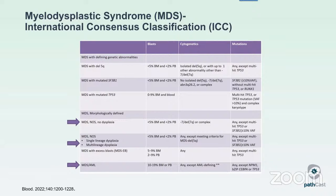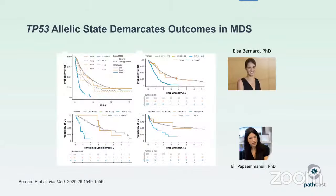Why is the allelic status of TP53 in MDS so important? This really comes from a seminal study published by Elsa Bernard and Eli Papamanuel, both at MSK at the time. This study came out of the IPSSM classification. They noticed that patients with one TP53 mutation, in terms of peripheral blood parameters and leukemia-free and overall survival, behaved like patients with wild type TP53. The detrimental effect and very poor prognosis associated with TP53 mutations was really limited to patients with multi-hit TP53 lesions.